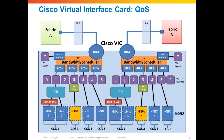Another thing you can do is limit the transmit bandwidth per VNIC. I took VNIC 1 and said it's going to be limited to just one gig of transmit bandwidth. So even if the 10 gig wire is completely available, it will never be able to transmit more than one gig of throughput.